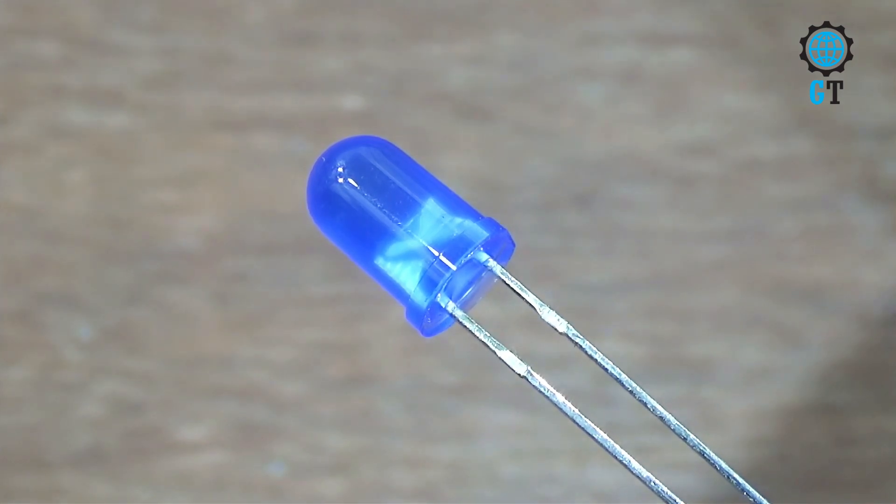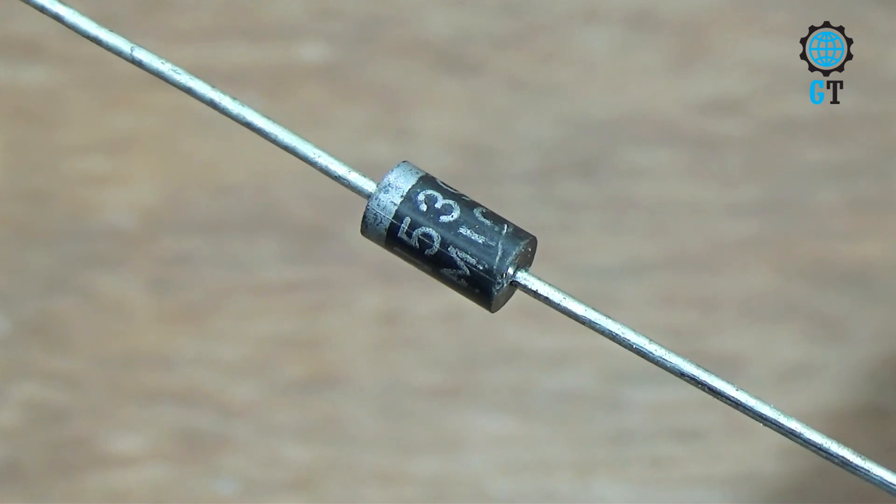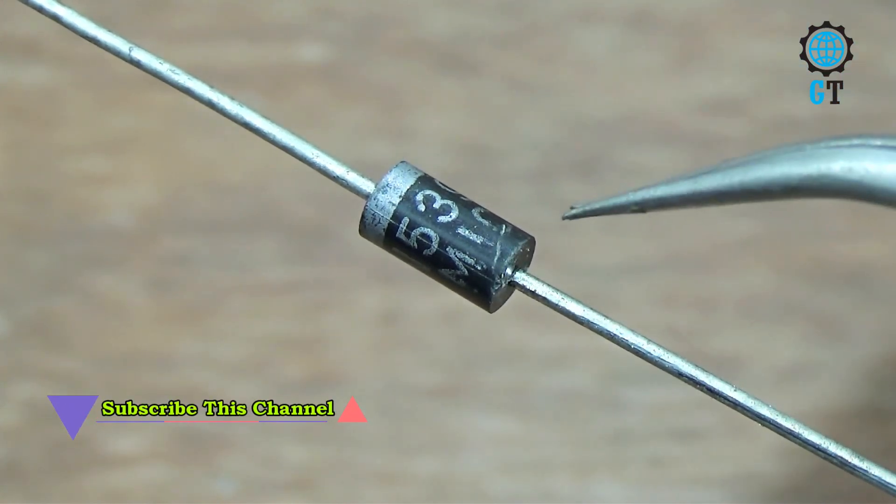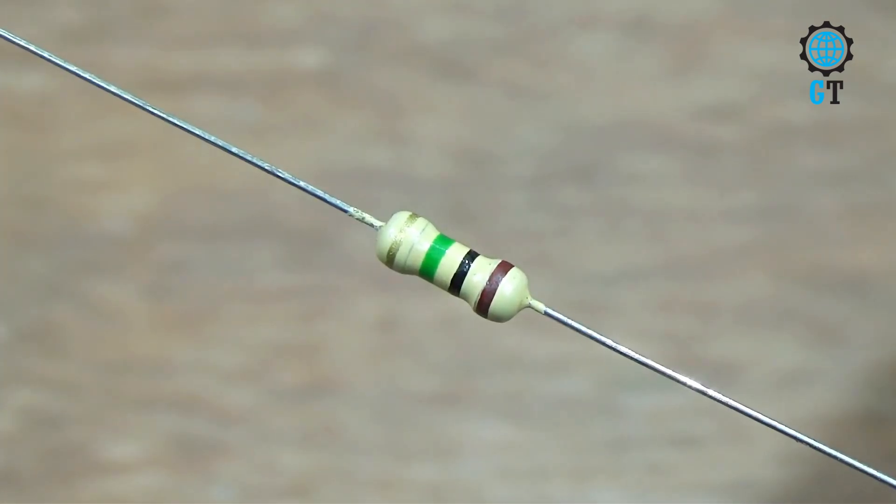5mm LED one piece, rectifier diode one piece. Its value 1N4007. It has polarity terminal. Its white side positive and the black side negative. And one piece resistor. Its value 1K ohm.